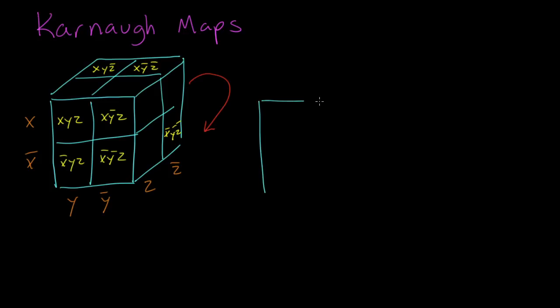So what we're going to do is take this back row and flip it around to the front. In other words we're going to draw the grid flat as a two dimensional picture. It ends up being a two by four grid with one of the variables down the side and the other two variables across the top.